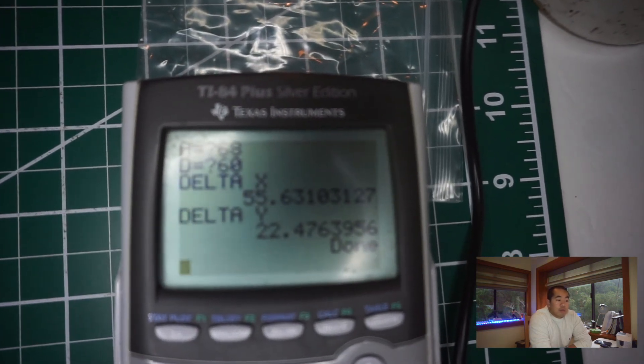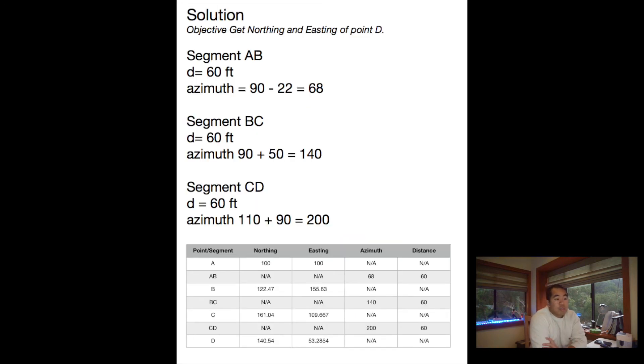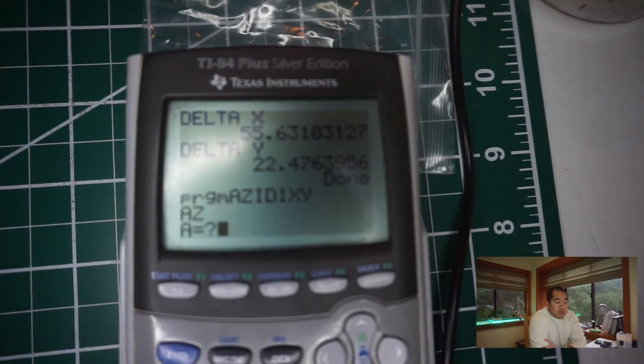What we get for point B is northing 122.47 and easting 155.63. We can use that information to go to the next coordinate, point C, because we know the distance is the same as last time, 60 feet, but now the azimuth angle is changing. So we're going to see that it will be a 90 degree angle here and then plus 50, so in that sense we're going to get an azimuth angle of 140.